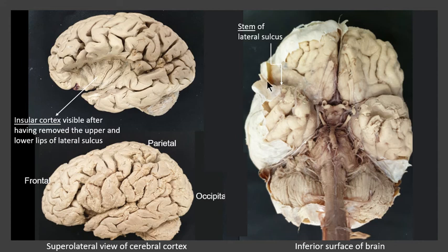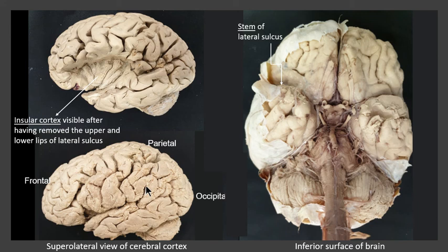If we follow the stem of the lateral sulcus and reach onto the supralateral surface, which we can see here — that's the supralateral view with the frontal lobe in the front and the occipital lobe at the back — the stem comes out and on the supralateral surface it splits into three different rami. We can see the posterior ramus, which is actually the continuation of the stem and the most prominent of the rami, going all the way back and ending somewhere in the parietal lobe. Then there is an anterior horizontal ramus and also an anterior ascending ramus.